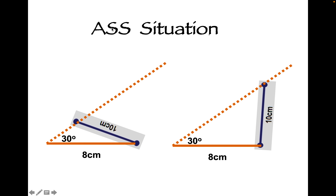Now why does ASS not work? Here's a triangle with a 30-degree angle, 8 cm, and 10 cm. Another triangle also has a 30-degree angle, 8 cm, and 10 cm. But that 10-centimeter side can rotate — spin side to side — and still create another triangle. Both triangles have the same angle, side, side, but they are two completely different triangles. That's why knowing angle, side, side is not enough to prove two triangles are congruent.